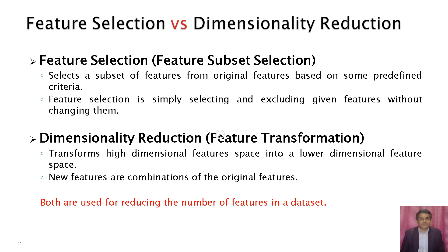This slide shows the difference between feature selection and dimensionality reduction. Most ML practitioners may treat feature selection and dimensionality reduction as the same thing. Feature selection, also known as feature subset selection, selects a subset of features from the original features based on some predefined criteria. It is simply selecting and excluding given features without changing them.